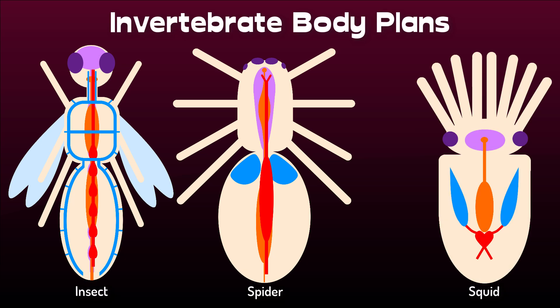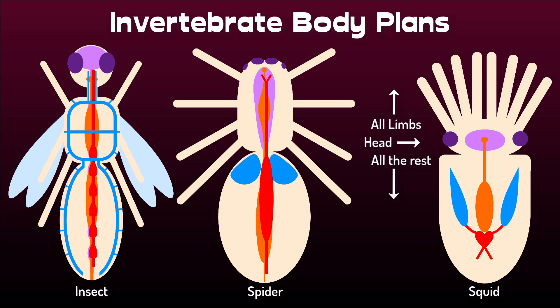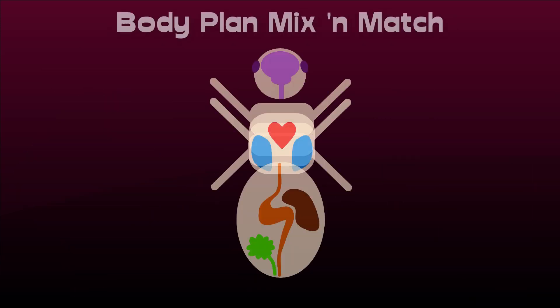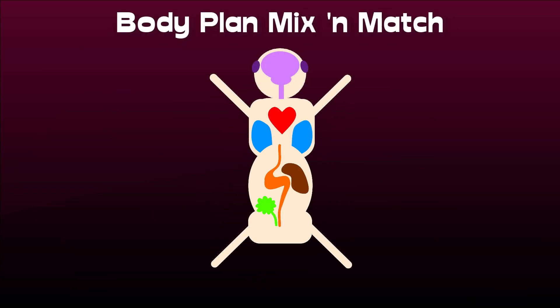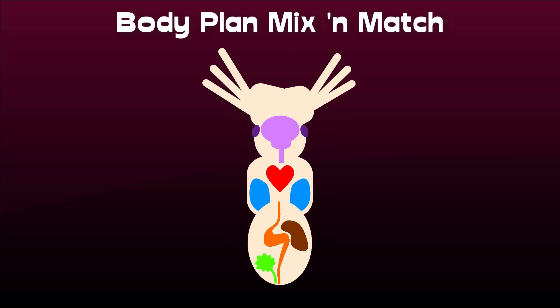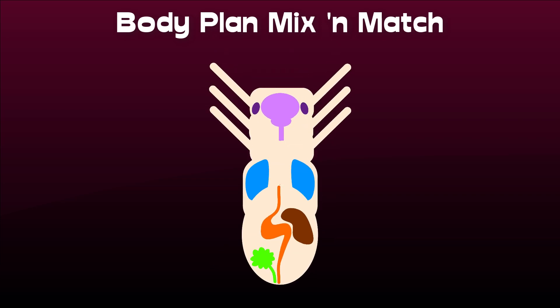Cephalopods like squid and octopuses have a completely different arrangement altogether. Here the head is placed in the middle, with limbs on one hand and the entire rest of the body on the other. So for evolution to arrive at a certain body plan for a creature seems to be a case of mix and match, and we could easily come up with a whole range of alternative arrangements to get some notion of how unremarkable the human body plan is.